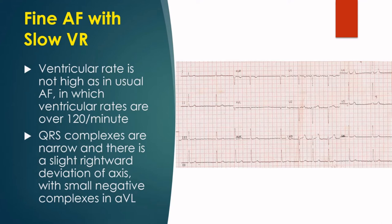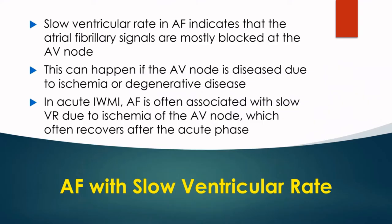The QRS complexes are narrow and there is slight rightward deviation of axis with small negative complexes in AVL. Tall R waves are noted in V5 and poor R waves in V1 and V2. There is no significant ST segment or T wave abnormality.